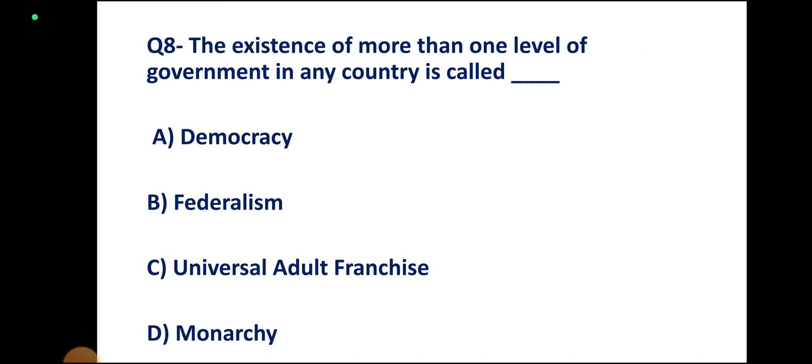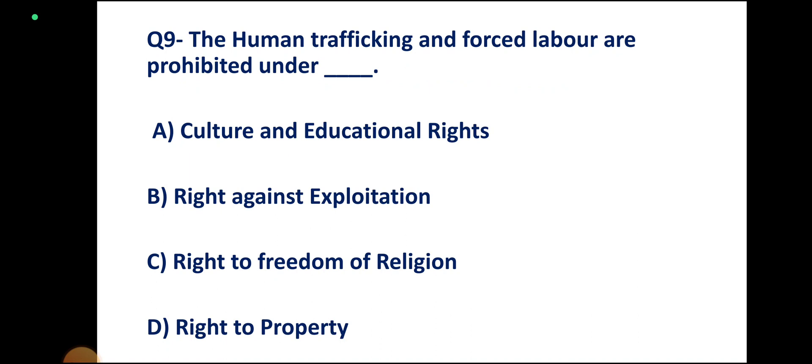Question number 8. The existence of more than one level of government in any country is called what? Options: Democracy, Federalism, Universal Adult Franchise, Monarchy. Correct answer: Federalism.